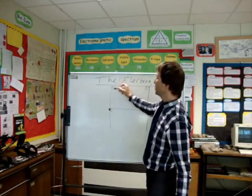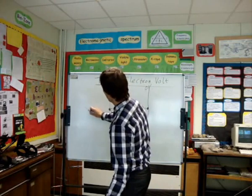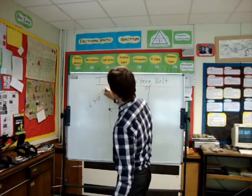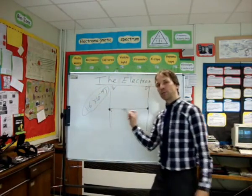So when the electron has got from here to here, not only has it got 1 electron volt, but the identical measurement is 1.6 times 10 to the minus 19 joules. That's how much energy it's got.